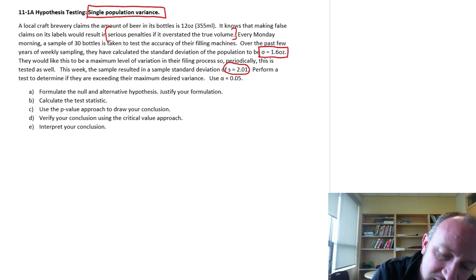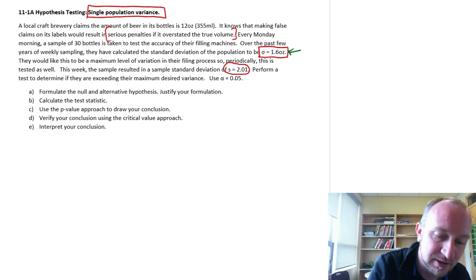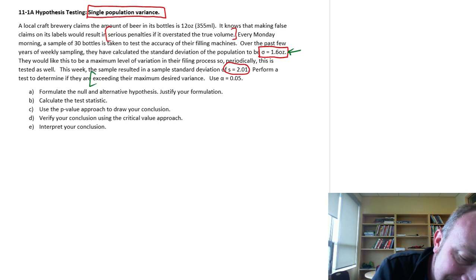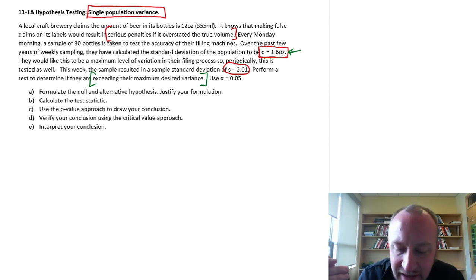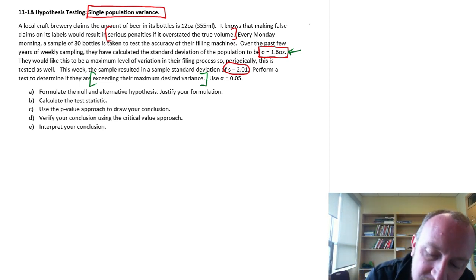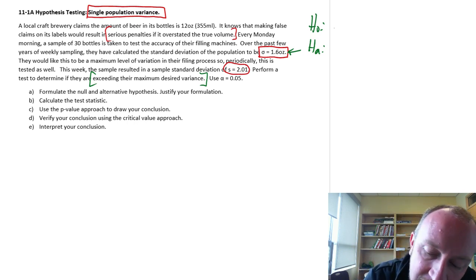If we have here a target standard deviation of 1.6 ounces, we want to make sure, we want to determine are they exceeding that targeted standard deviation or as is the same thing, that variance. So what we're going to put together here, I'm going to change this into variances rather than standard deviations because that's what we're going to be working with. The chi-squared distribution is a squared normal so we're going to square that standard deviation and I'm going to be testing now the population variance sigma squared.